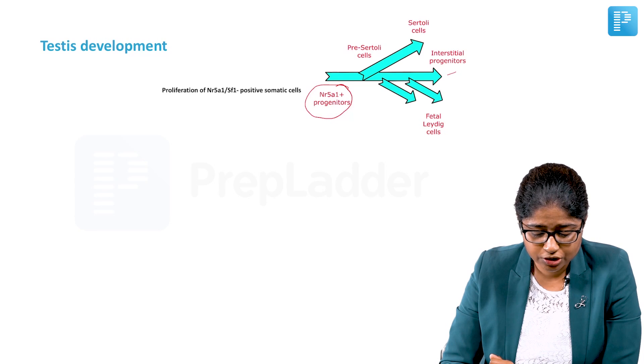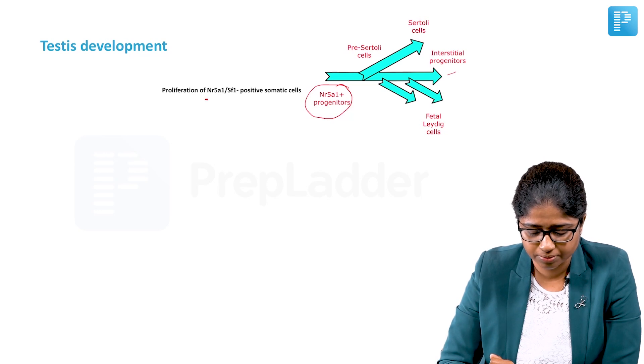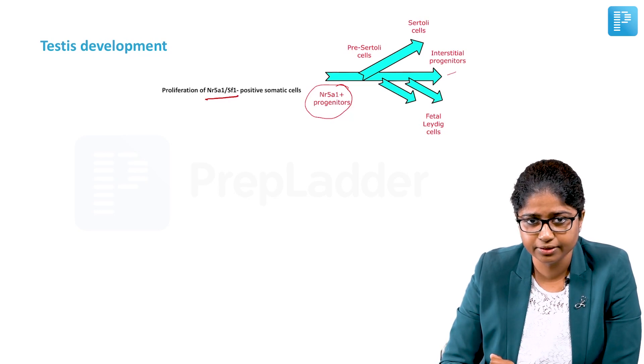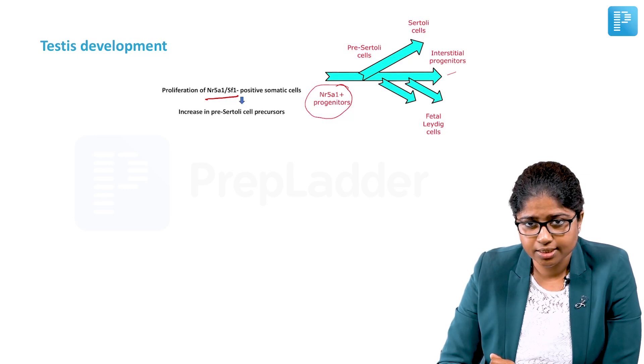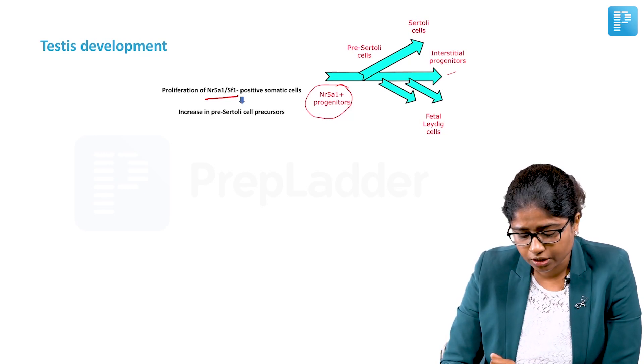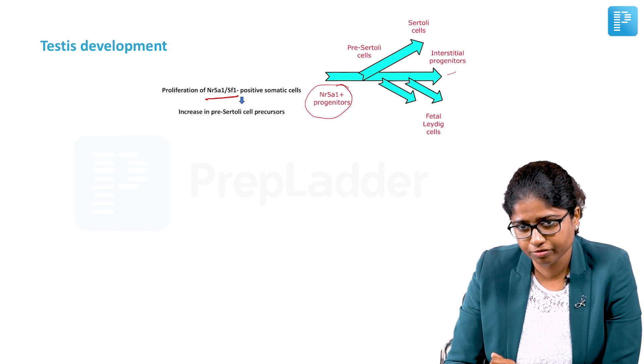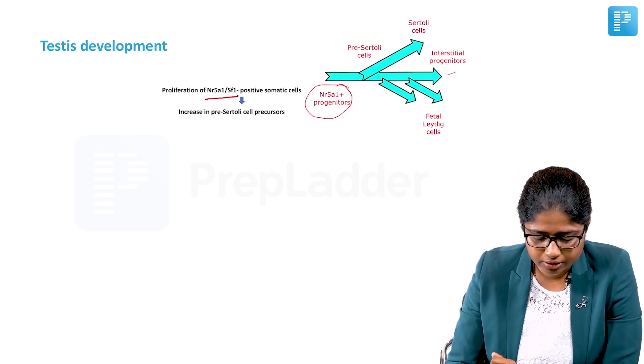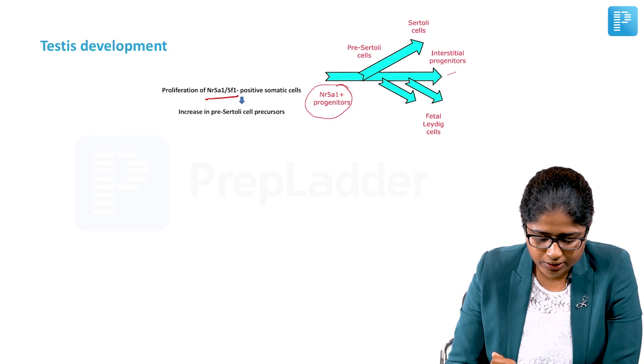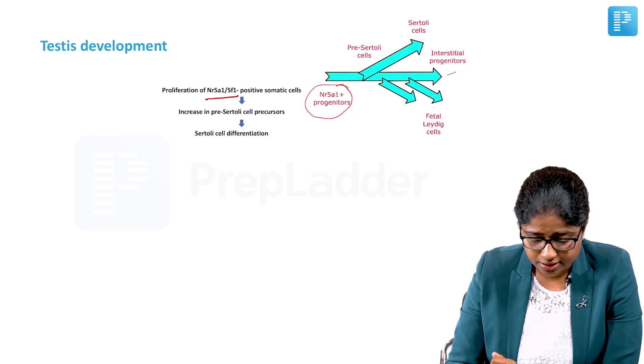First you have the proliferation of the NR5A1 SF1 positive somatic cells. You can just remember NR5A1 SF1 positive somatic cells. This results in the increase in the pre-Sertoli cell precursors. This Sertoli cell production happens a little bit before the development of the Leydig cells. So that is an important thing to remember: pre-Sertoli cell precursors followed by Sertoli cell differentiation.